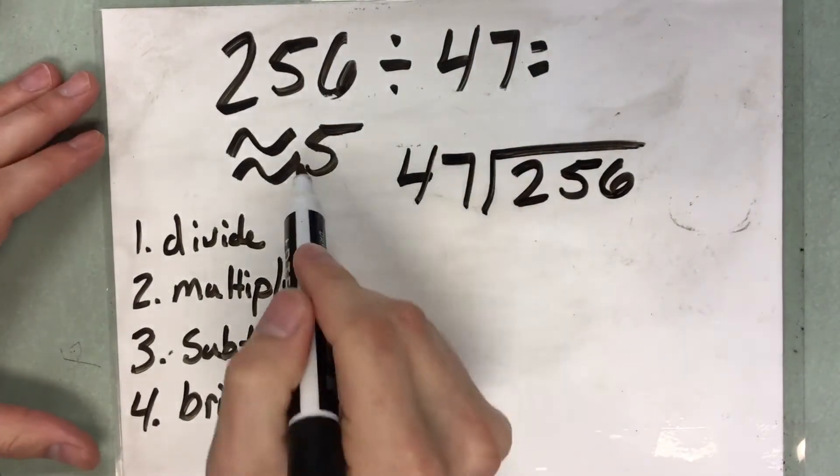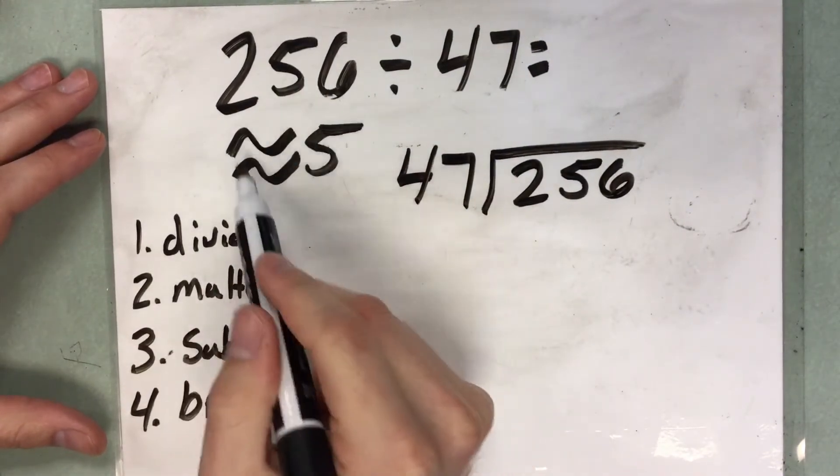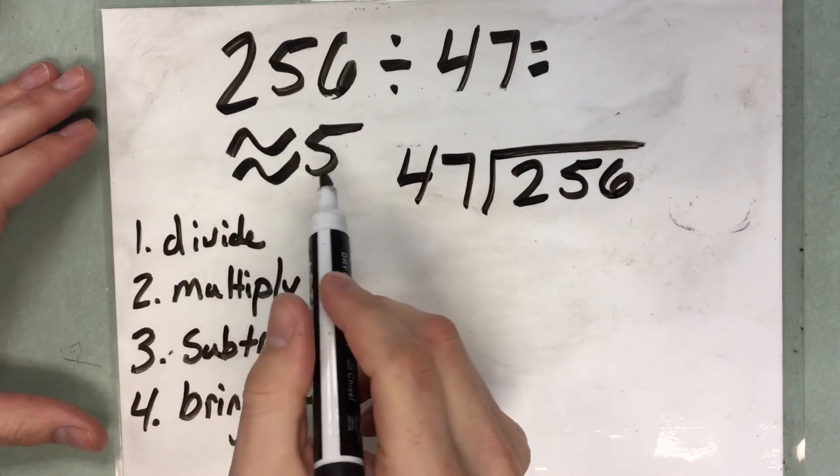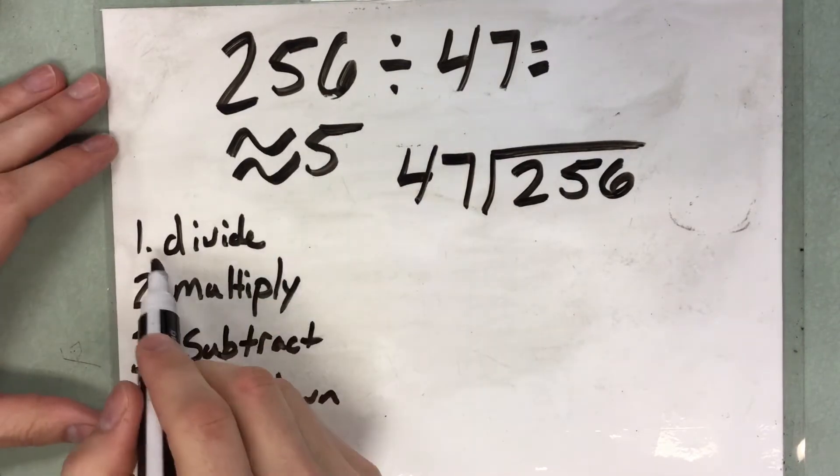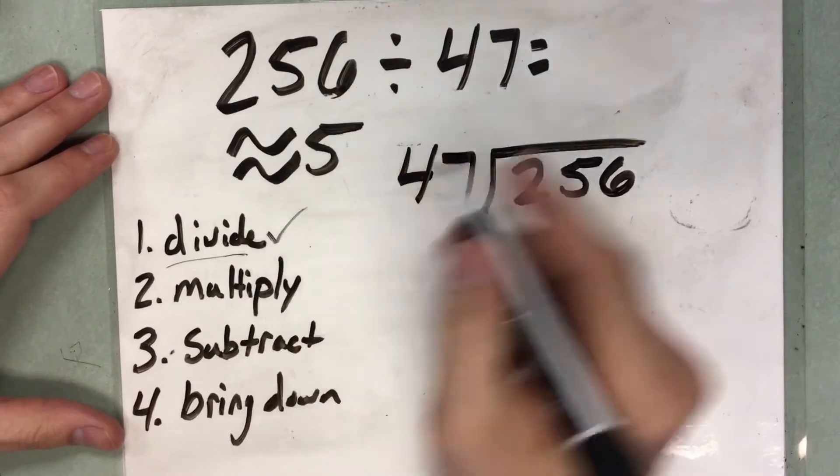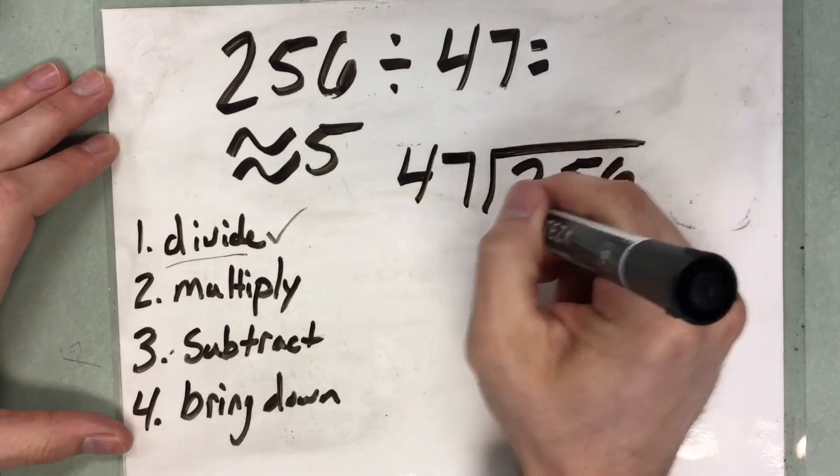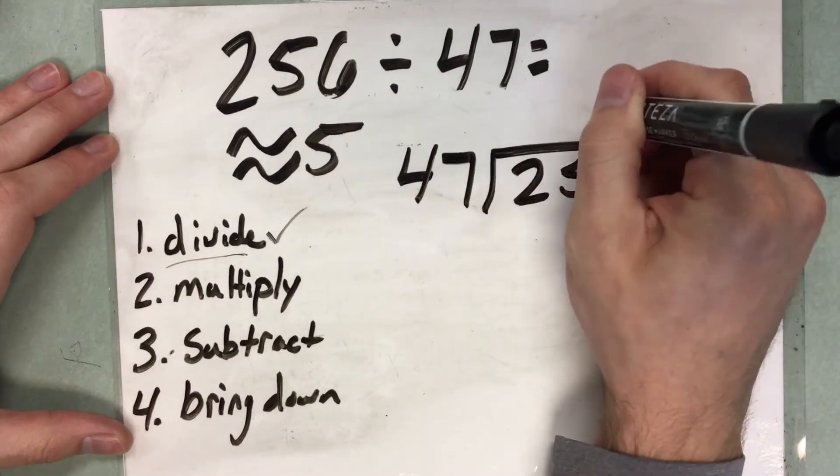Now, what I need to remember is that this is about 5. So my answer should be somewhere around 5. So I'm going to use that as my first step, or divide. So I'm going to say 256 divided by 47 is 5.